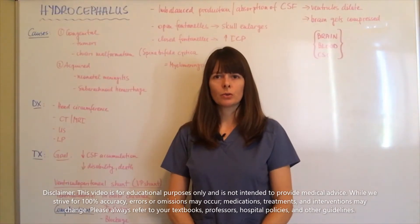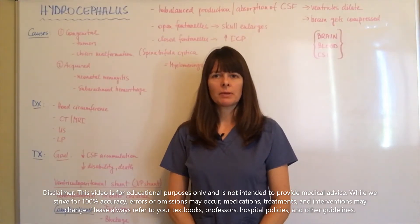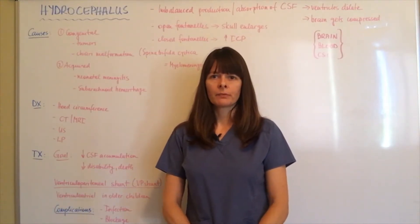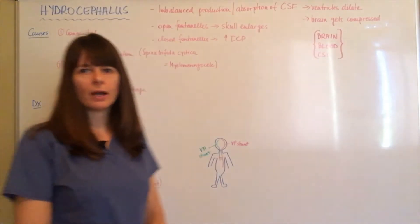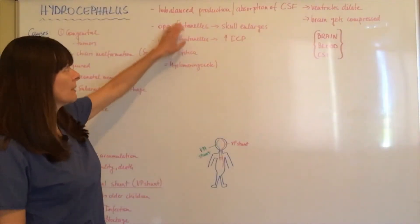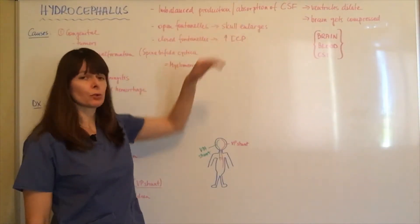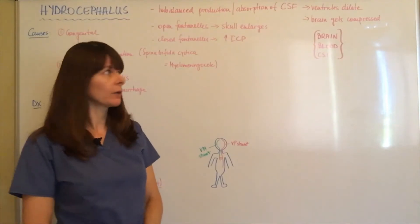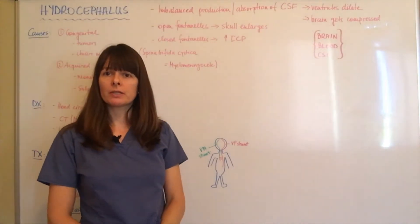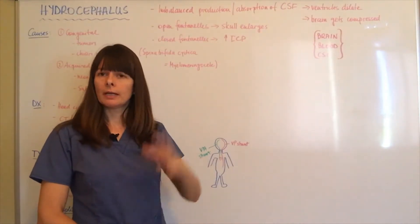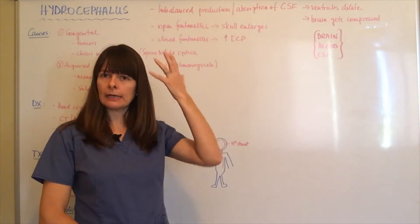Hi, welcome to Nursing School Explained. Today's topic is hydrocephalus. Hydrocephalus is an imbalance between the production and absorption of cerebral spinal fluid. Remember that cerebral spinal fluid is in the brain and also flows all the way down into the spinal cord.